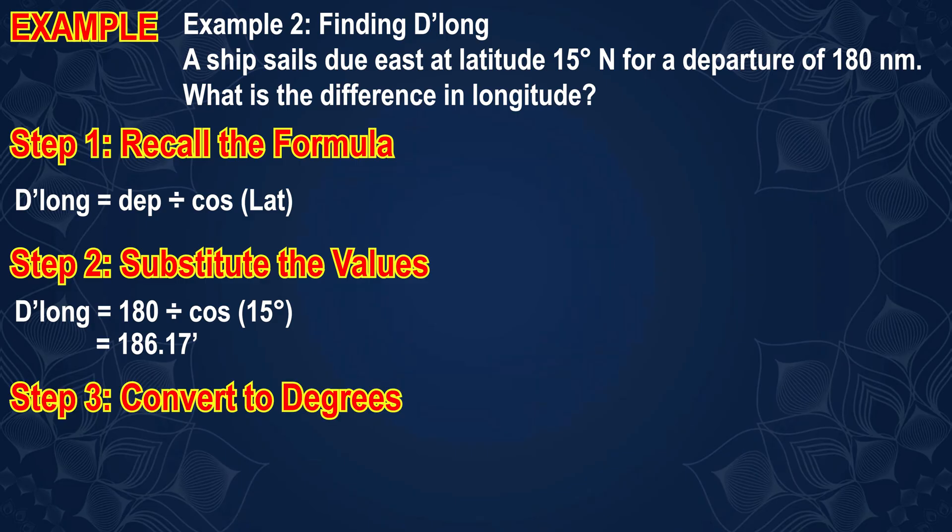Step 3: Convert to degrees. Divide 186.17 minutes by 60. This equals 3.10 degrees, or about 3 degrees and 6 minutes. Final answer: The change in longitude is 3 degrees 6 minutes.